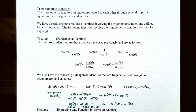Let's talk about trigonometric identities. Trigonometric functions of angles are related to each other through several important equations called trigonometric identities. We've already encountered some of these involving trigonometric functions defined for a real number t. The following identities involve the trigonometric functions defined for any angle theta.